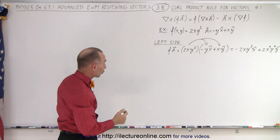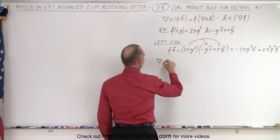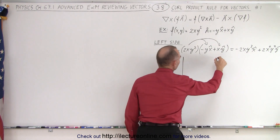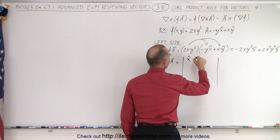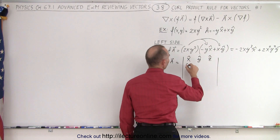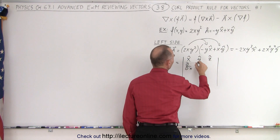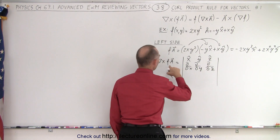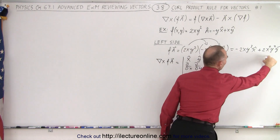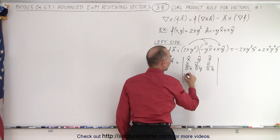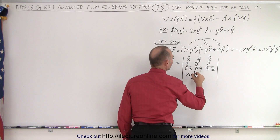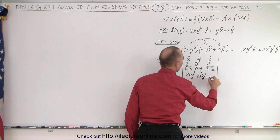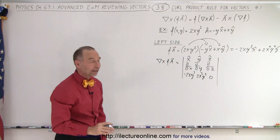Now we need to take the curl of that. The curl of f·a is evaluated using the determinant with x, y, z unit vectors in the first row; partial derivatives with respect to x, y, z in the second row; and the components of f·a in the bottom row: minus 2xy³, plus 2x²y², and 0.